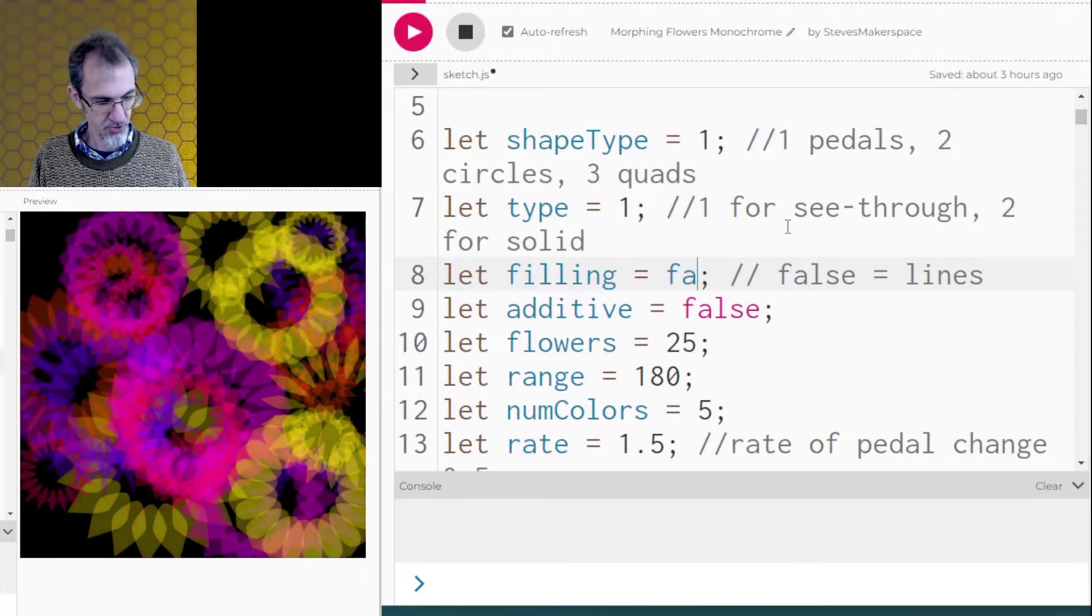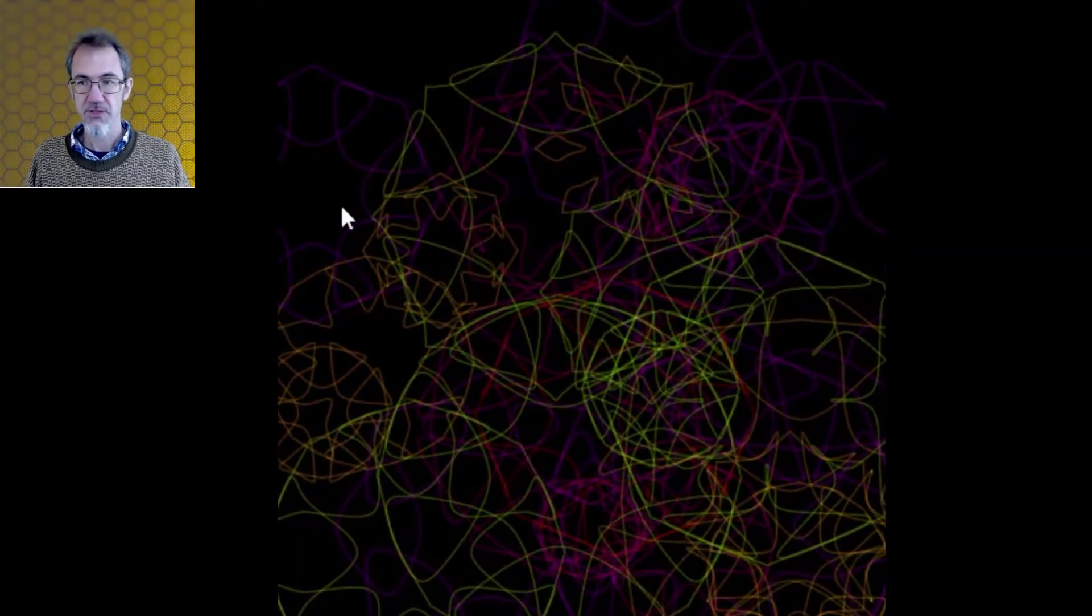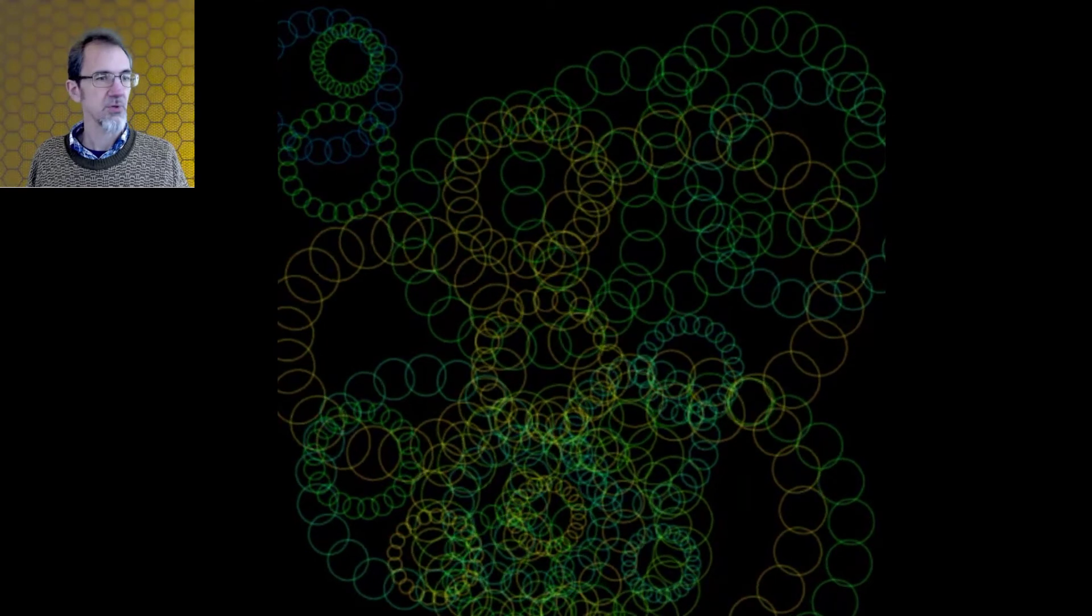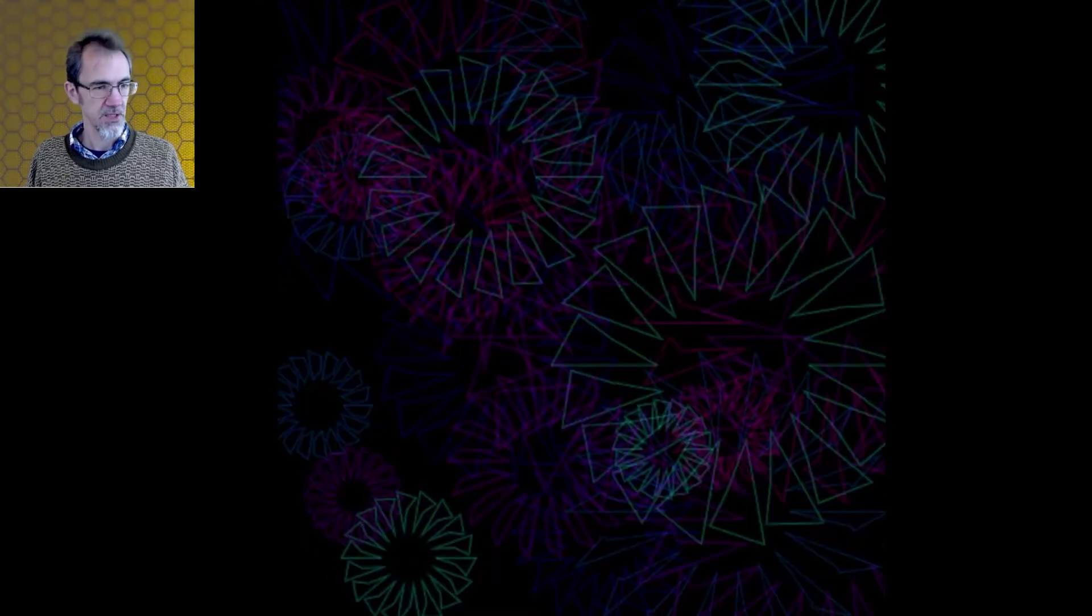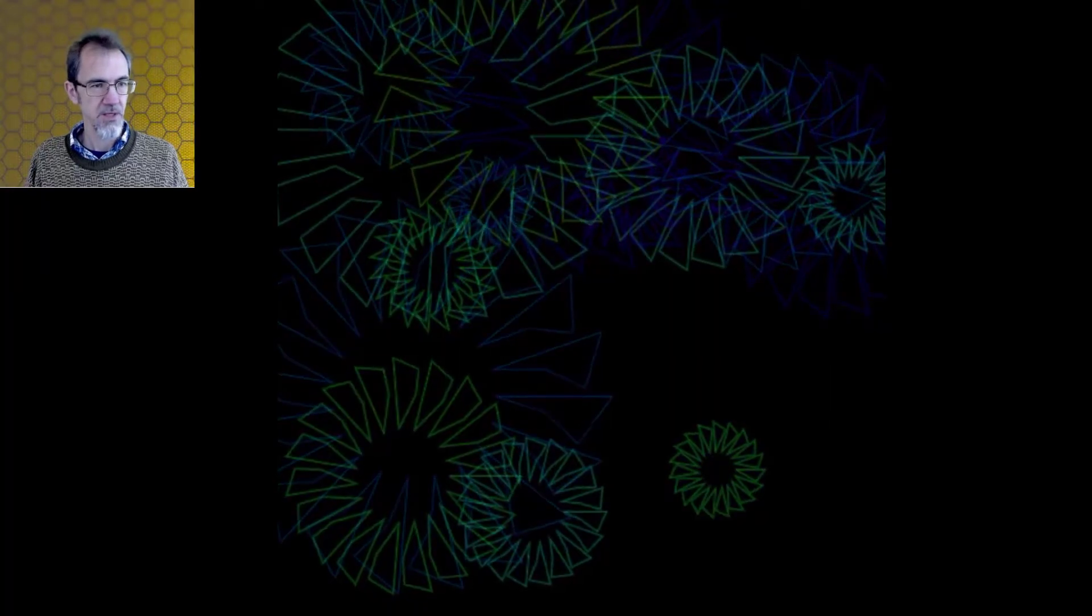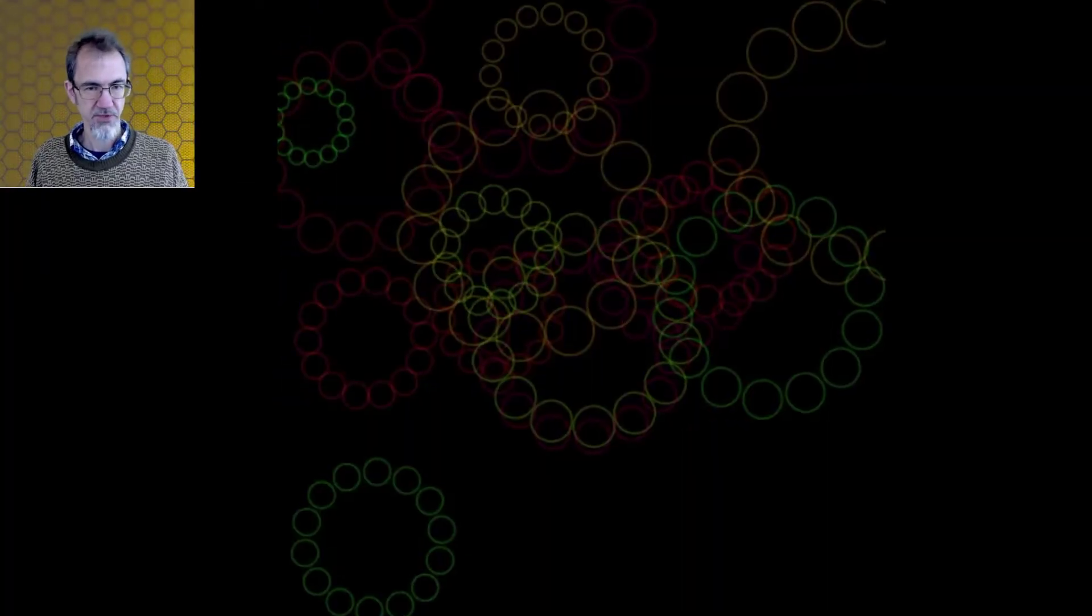Filling is true. Let's go just to lines. So here's outlines instead of filling the petals. We'll change that to circles. Let's switch over to quads. Let's reduce the number of flowers I'm drawing to say 15, so we can see that a little bit better. Let's go back to circles.